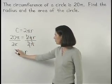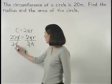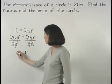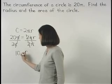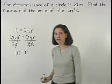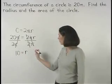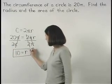And on the left side, the pi's cancel, and 20 divided by 2 is 10. So we have 10 equals r. So the radius of the circle is 10.